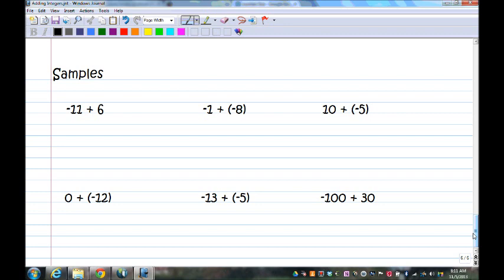Okay. First one. I have signs are different. I have negative 11 plus six, so I subtract the numbers. I get five. Keep the sign of the number with a greater absolute value. That would be this, because an 11 is bigger than six. It's a negative, so my answer is negative.